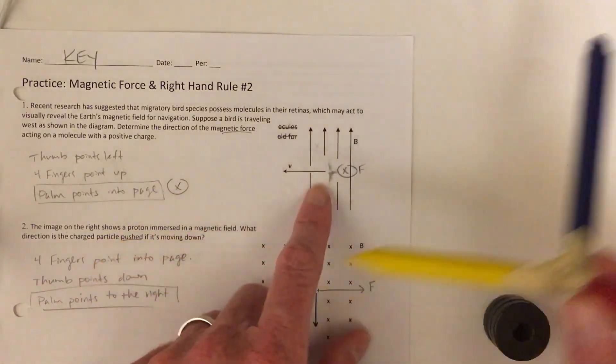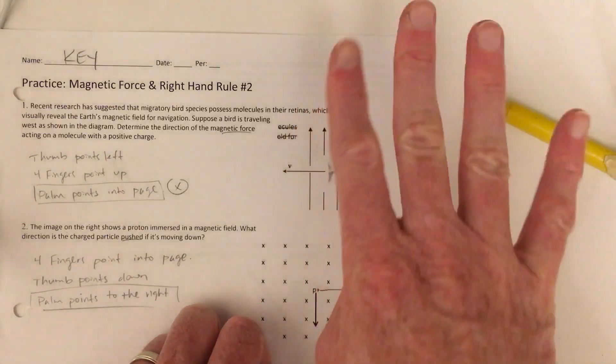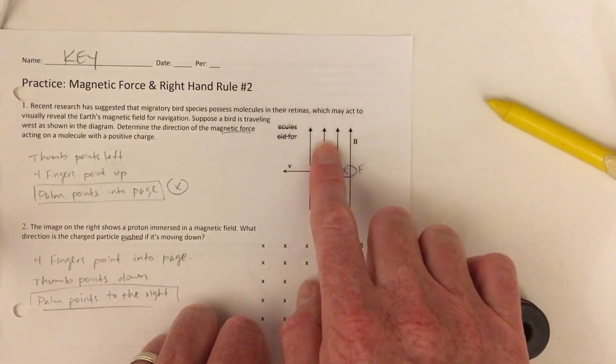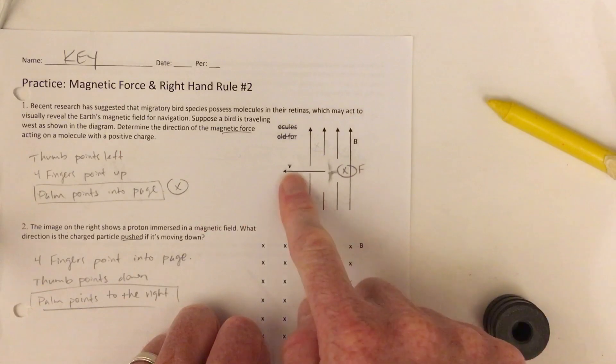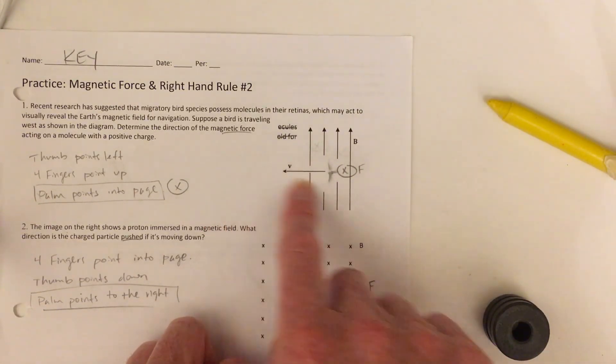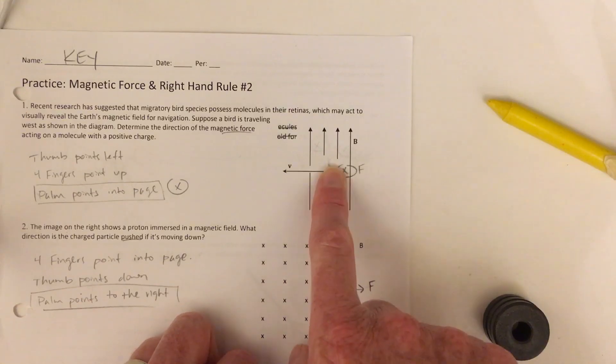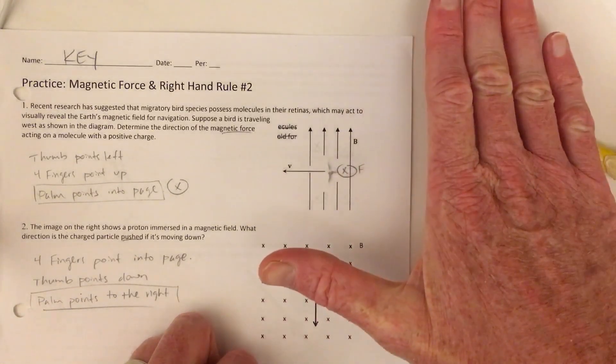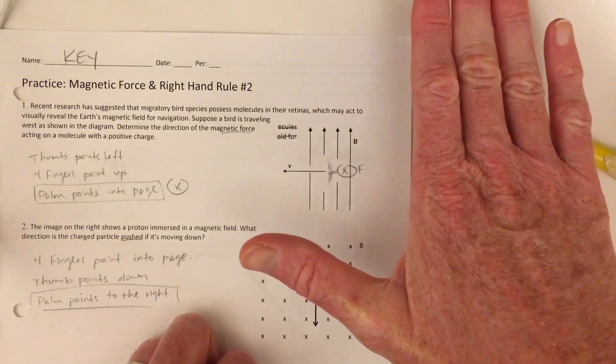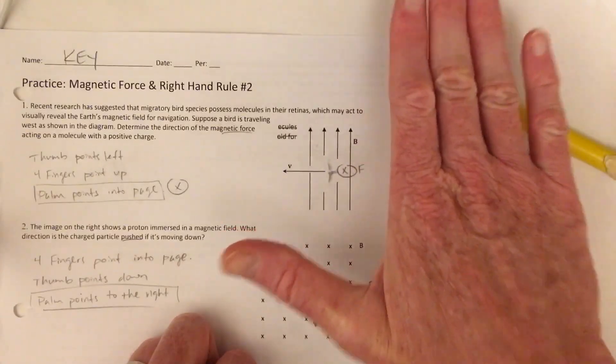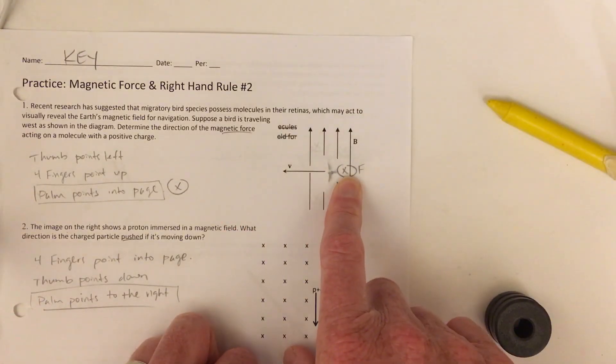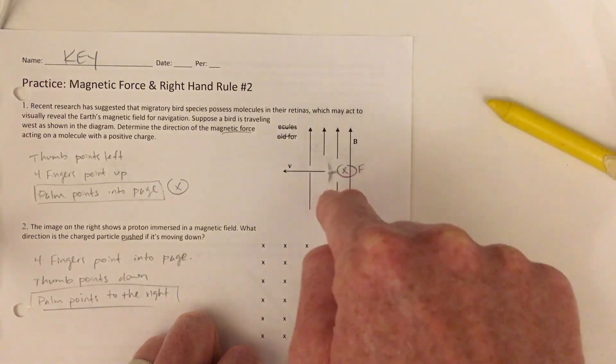So number one, first I hold my four fingers in the direction of the magnetic field, which is up. Then I push my thumb in the direction of the velocity of the particles. These are particles in a bird's brain, I believe. And so when I do that, I hold my hand like this, and therefore my palm is pointing into the page. I'm slapping into the page. And so I draw an X to say that the force on the bird will be in this direction.